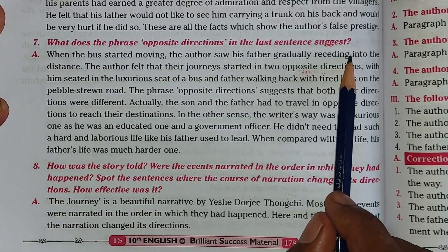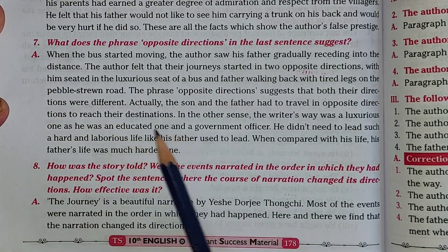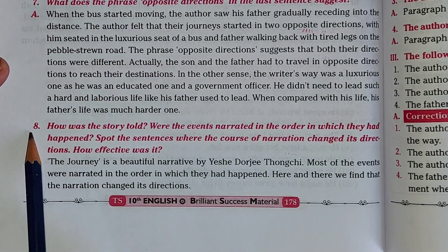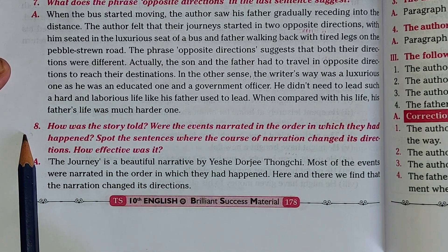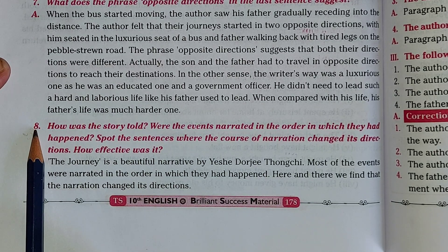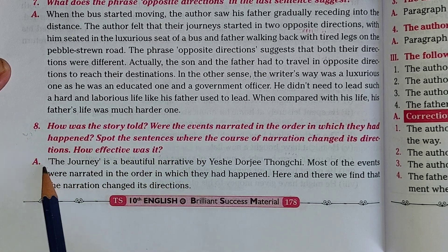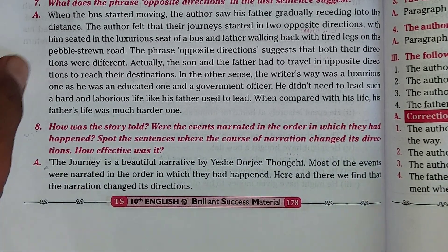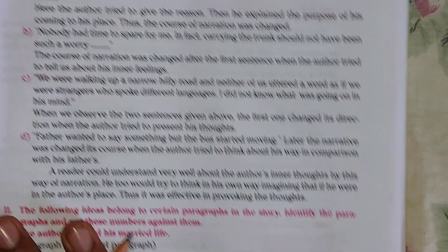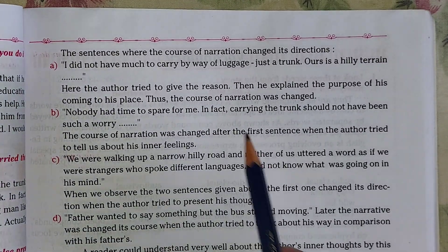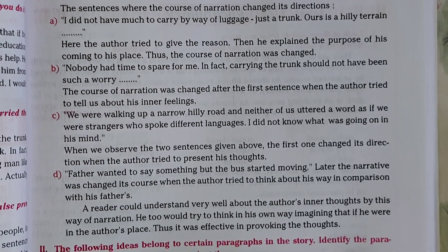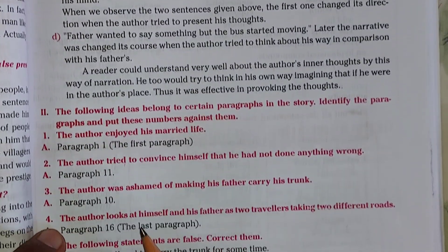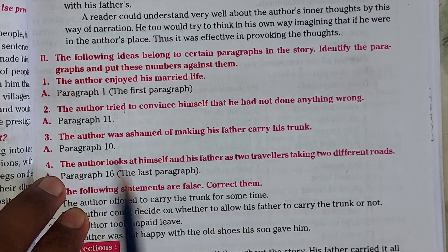The seventh question starts and ends here, with the answer written here. After that we have the 8th question. All these questions are available in your textbook - I have already read these questions and I am showing you. The 8th question starts and ends here, and the answer is continuously moving to the next page. You can see this is all the 8th question answer.